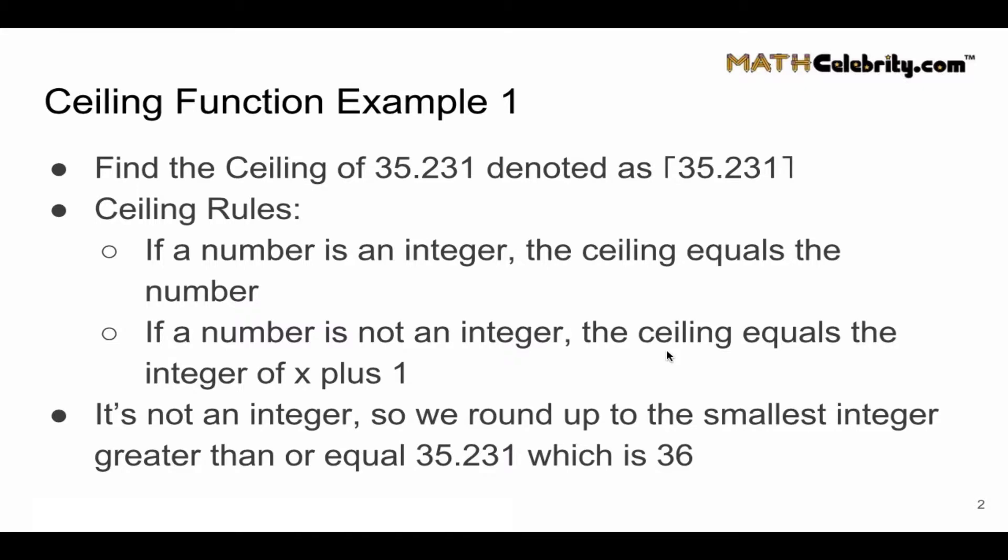Thinking about this a different way, the smallest integer greater than 35.231 is 36. You can walk through the ceiling function either way, whatever feels more comfortable.